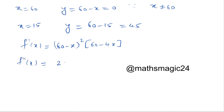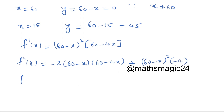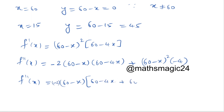Applying the product rule, f''(x) equals 2 times (60 minus x) times (minus 1) times (60 minus 4x) plus (60 minus x)² times (minus 4). Taking (60 minus x) common and factoring out minus 2, we get f''(x) equals minus 2 times (60 minus x) times (180 minus 6x).